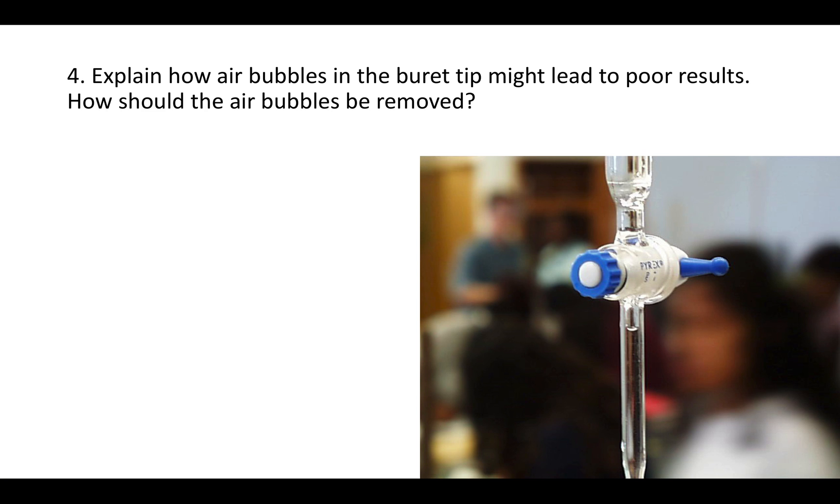Question four says, explain how air bubbles in the burette tip might lead to poor results, and how should the air bubbles be removed? If you have air bubbles in the burette tip, eventually, when you open the stopcock, the air bubbles will come out and you're going to think that you added titrant. Whereas, actually, you didn't. You just added air that never went into the solution at all. Having air bubbles is going to mess up your volume readings for how much titrant you added. You're going to think you added more titrant than you actually did. You really added some titrant and some air. That's what you actually added, but you're going to think you added all titrant. That's how that will mess up your results.